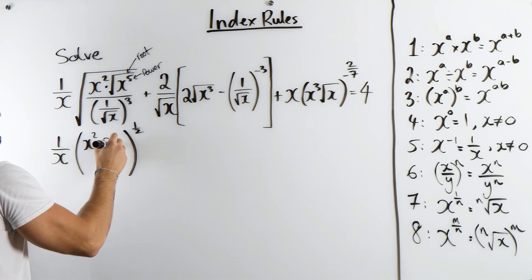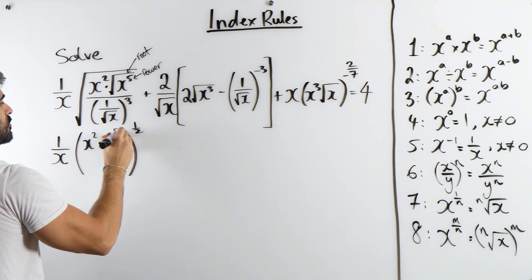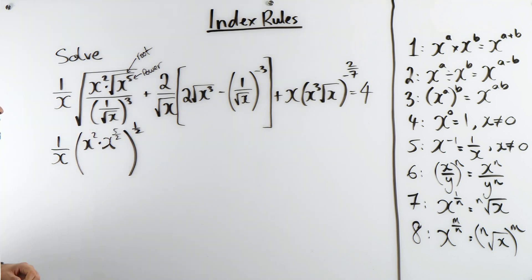So we're going to have x to the power of 5, that's the power section, root 2. The root, the fractional part, will be 2.